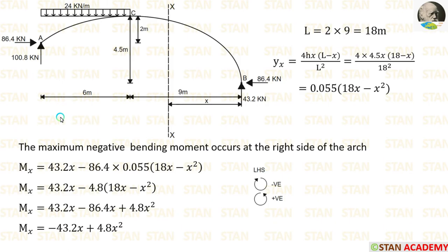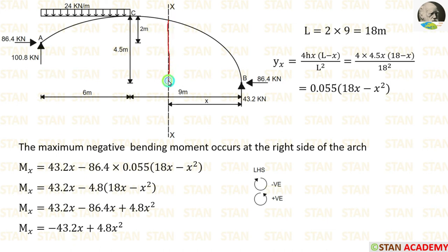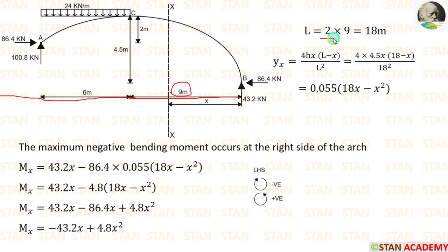We need to find the maximum negative bending moment. It will occur on the right side of the arch, where there is no load and the vertical reaction VB is small. We make a section at horizontal distance x from B on the right side. To calculate the moment, we need the height yx, given by the parabolic formula yx = 4h·x·(L−x)/L². For the right side with half-length 9 m, the equivalent full span L is 18 m, giving yx = 0.055·(18x − x²).